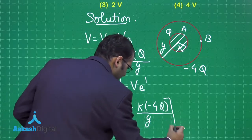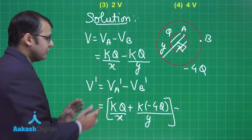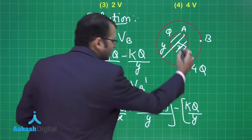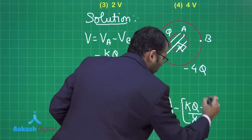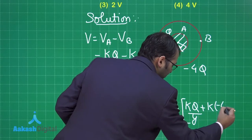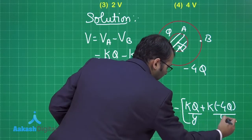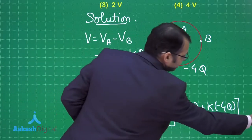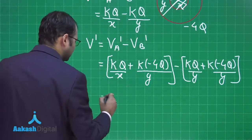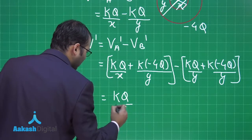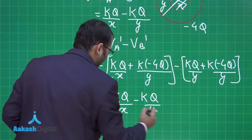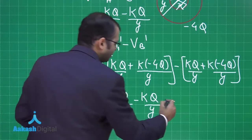Now talking about potential of B, it would be kQ/y due to the inner charge, and due to the outer charge that is k times -4Q by y. When you solve this, it's pretty amazing to understand it would again be coming to kQ/x minus kQ/y.